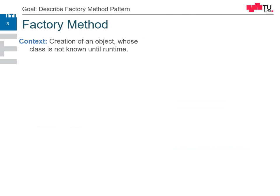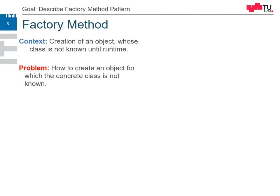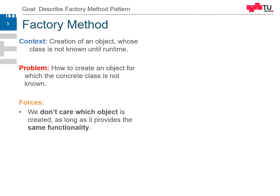The context of the factory method is we want to create an object whose class is not known until runtime. So at compile time we don't know actually which actual class will fulfill this role or this interface. Sometimes we can't anticipate which class we want to create, so in dynamic cases during runtime it is chosen which actual class we want to use.